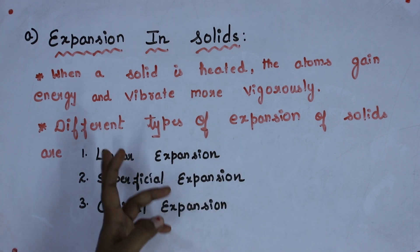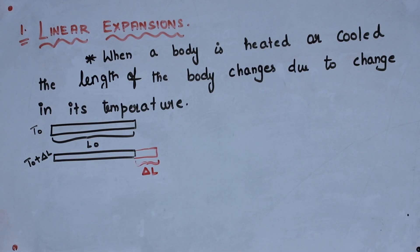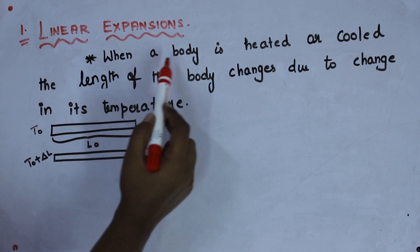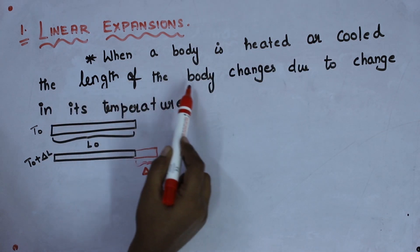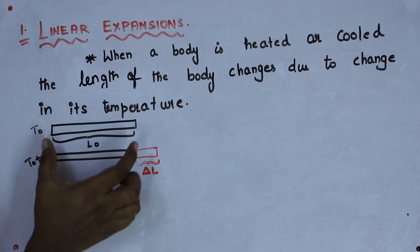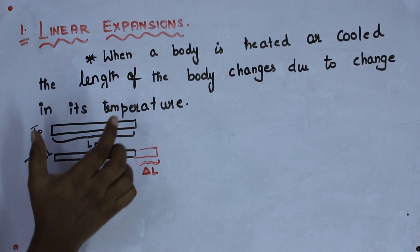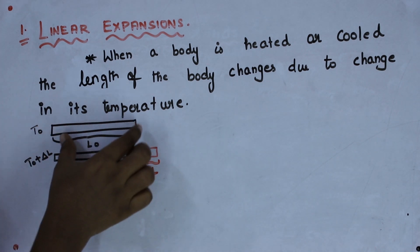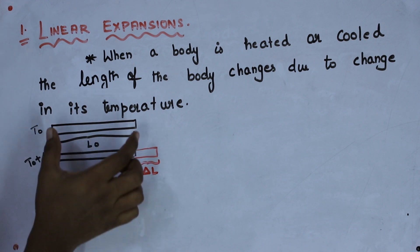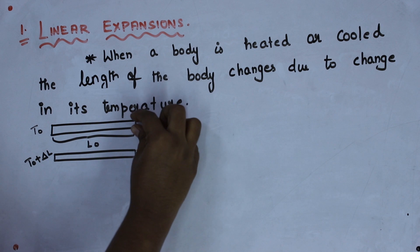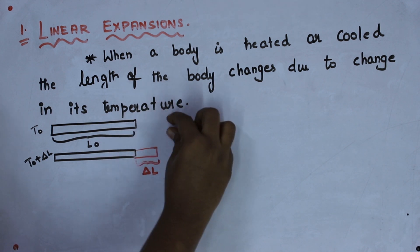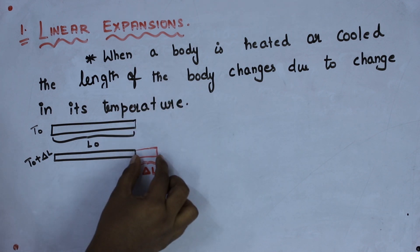We are going to discuss linear expansion. In expansion in solid, the first type is linear expansion. When a body is heated or cooled, the length of the body changes. Considering one solid rod — if we give some temperature to the solid rod, after applying the temperature, the solid rod will expand. That expansion I am considering as delta L.